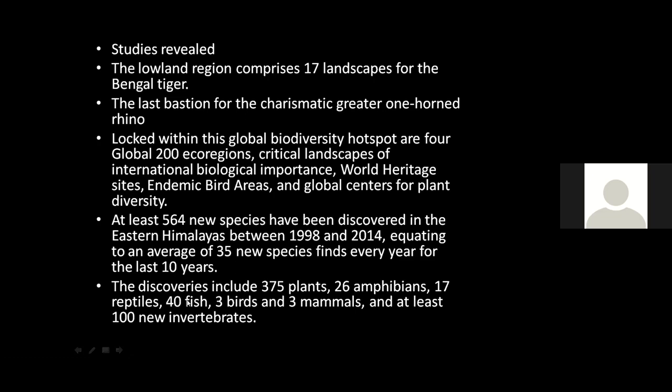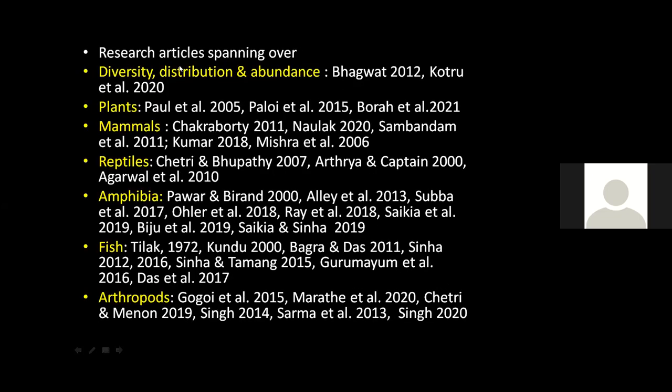There are quite a good number of amphibians — in 2021 alone, a couple of amphibian species, one reptile species, and three fish species were described. Birds and mammals are being described, and at least 100 new invertebrates have been discovered from this region. Research articles spanning diversity, distribution, and abundance cover plants, mammals, reptiles, amphibians, fishes, and arthropods, and most of these works are in the present century.